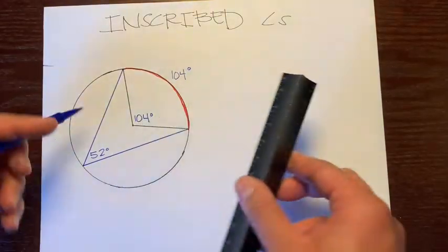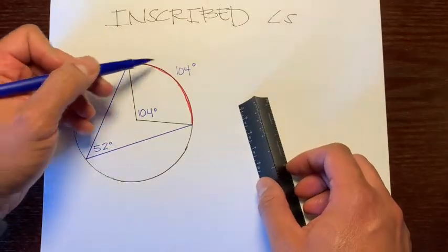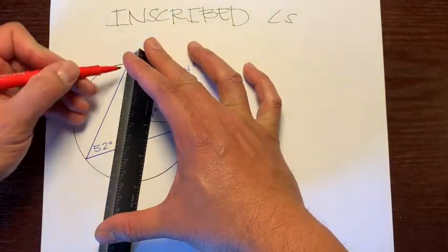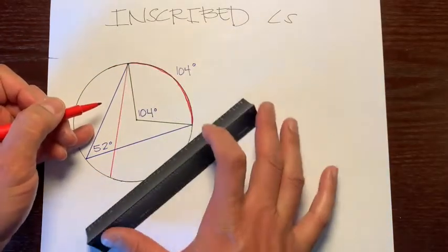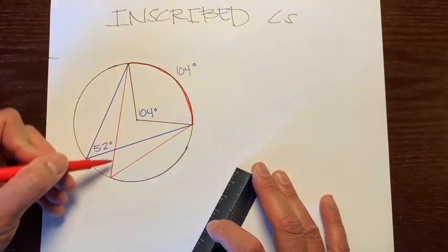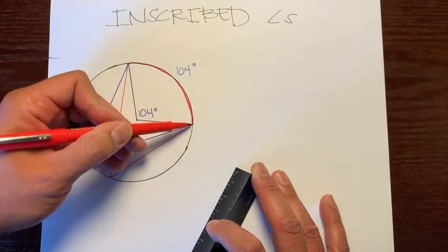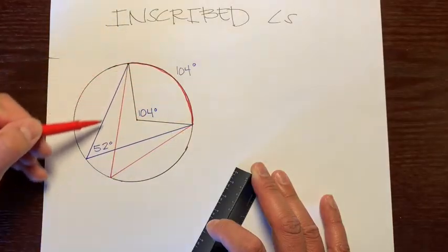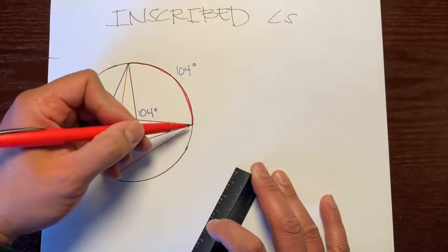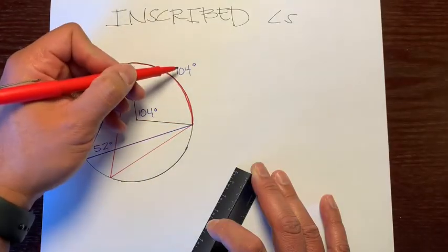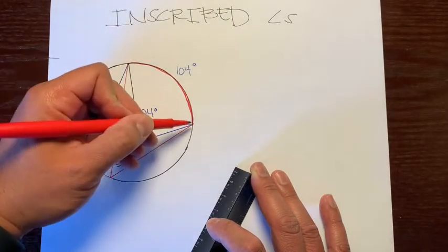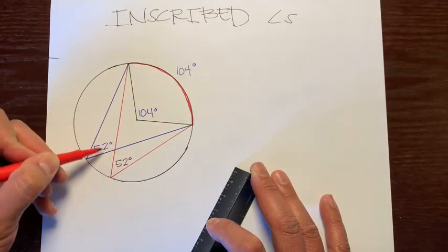Now let's draw another inscribed angle using the same intercepted arc. I'll take this red pen and go from this point to here. This red inscribed angle has the same intercepted arc as the blue inscribed angle. Since both are eating this arc, the red angle is also half of 104 degrees, which is 52 degrees. Since they both have the same intercepted arc, these two angles are congruent.